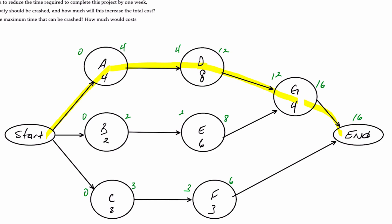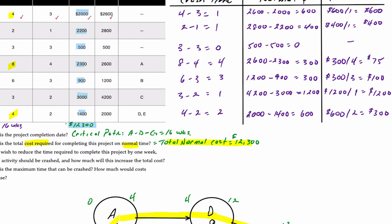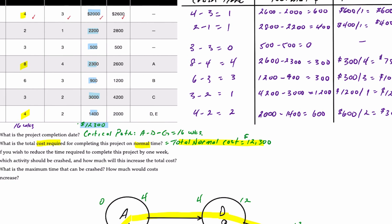The next question asks for the total cost required to complete the project in normal time. That's simply the sum of all the normal costs, which add up to $12,300, as identified in blue.